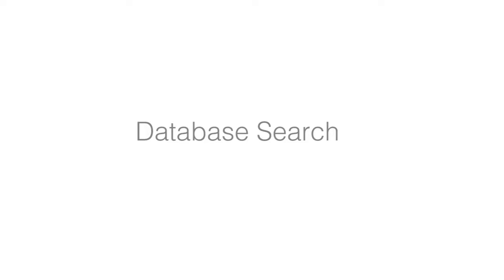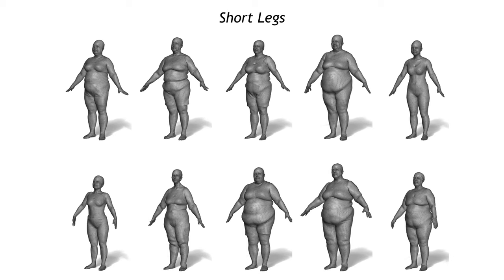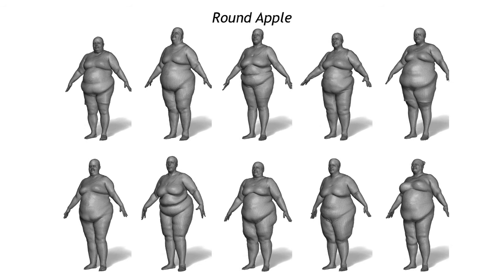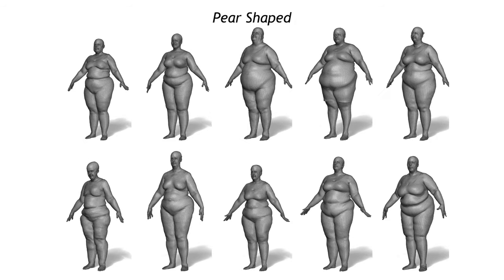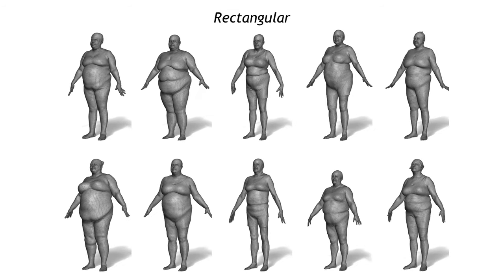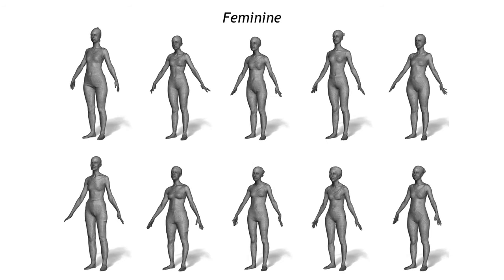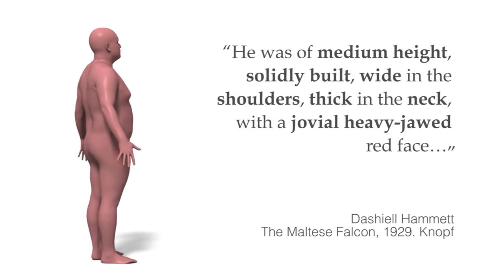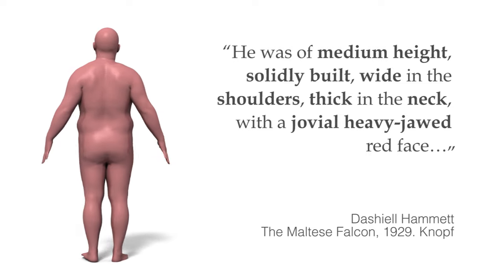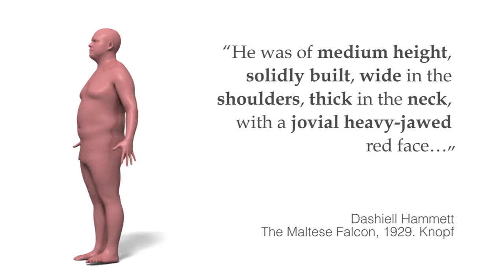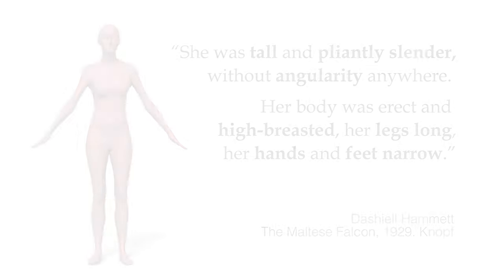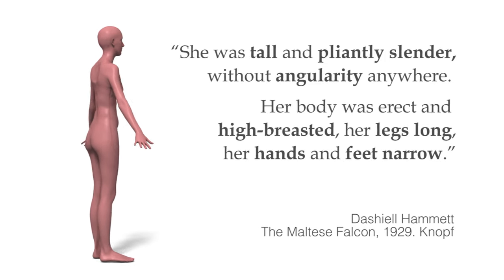We can use our verbal descriptions for practical applications. Inverting our linear predictor, we can generate word ratings from body shapes. We did this for all the bodies in the Caesar dataset, and then augmented the dataset to contain these linguistic fields. Now we can search the database for subjects with particular attributes, combining attributes and using ranges of values. We also collected words used to describe characters in the book The Maltese Falcon, crowdsourced ratings of the training bodies for these words, retrained the words-to-shape model, conditioned on the words to estimate ratings for the remaining words, and generated bodies of the characters.